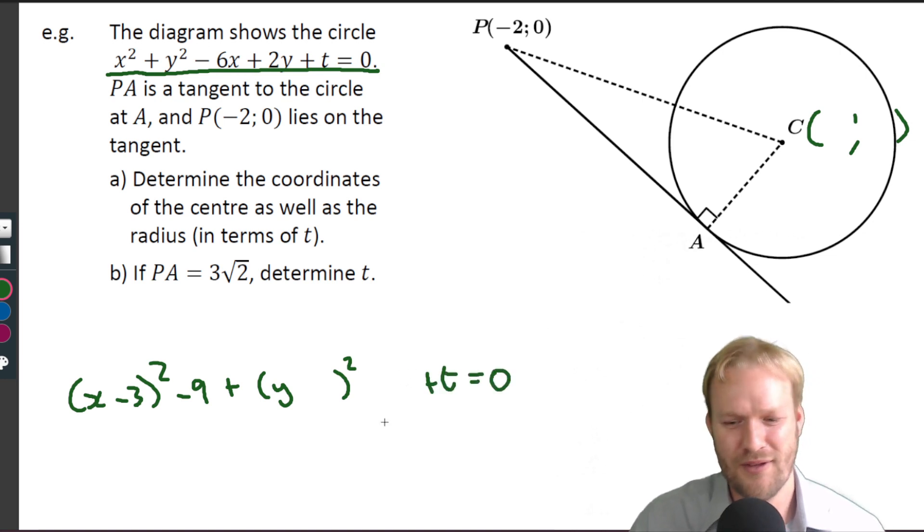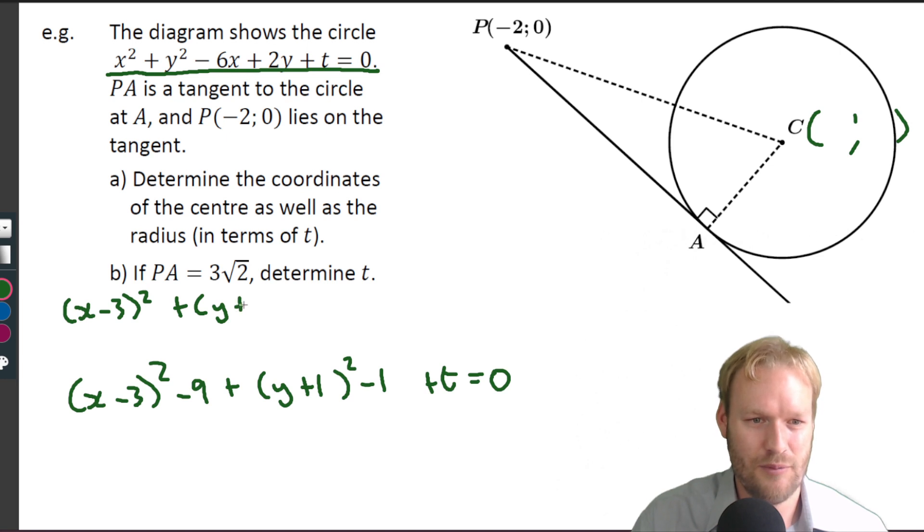And see the previous part, I couldn't remember which part it was where we completed the square. Okay, so y plus two, so plus one minus one.